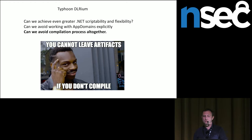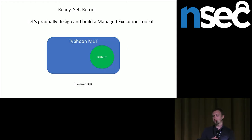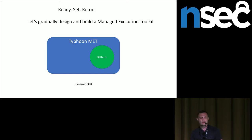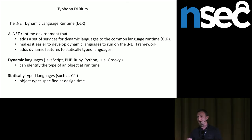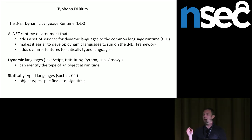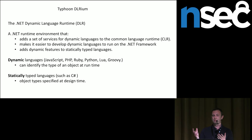Let's start building this Managed Execution Toolkit even further. Let's look at a component called Delirium. We want to bring in the Dynamic Language Runtime — DLR — into the mix. What is DLR? In .NET you've got CLR, the Common Language Runtime, but you also have the Dynamic Language Runtime — a set of services to create dynamic languages in .NET or using .NET facilities. The advantage is you move away from statically typed languages like C# to something completely dynamic. Dynamic languages — we know JavaScript, PHP, Python — and this is going to gain us a lot of advantages.